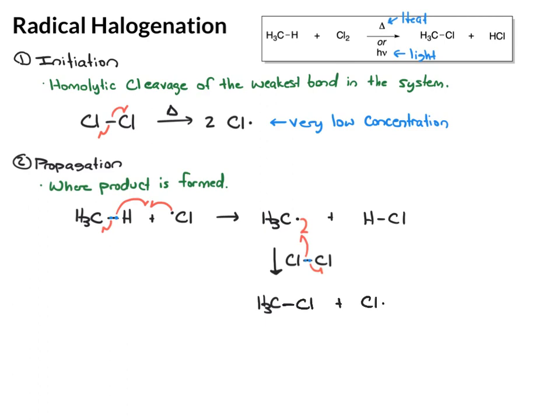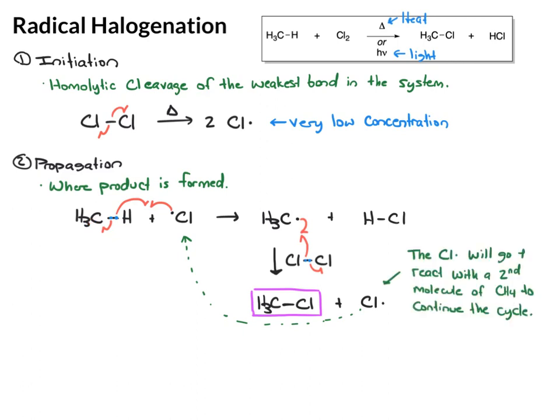So in this propagation, we formed our product. But we also formed a chlorine radical. And what happens is as soon as this chlorine radical is formed, it can now go back up here and do a second round of propagation. So this is kind of a cyclic process where as soon as one molecule of product's formed, we get a radical which can do this process again. Then we get another radical. It will do the process again. And so forth and so forth until all of the methane gets converted into chloromethane.